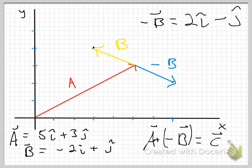And now, if I can find yet another color, I can draw in my vector C using my normal rules for vector addition. I start at the tail of A and go to the tip of B. And that's my resultant vector C.